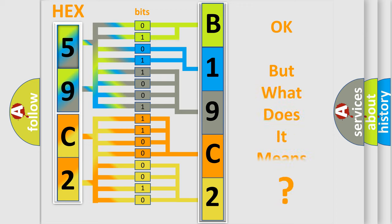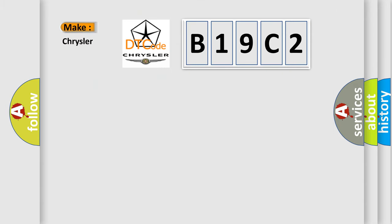The number itself does not make sense to us if we cannot assign information about what it actually expresses. So, what does the diagnostic trouble code B19C2 interpret specifically for Chrysler car manufacturers?